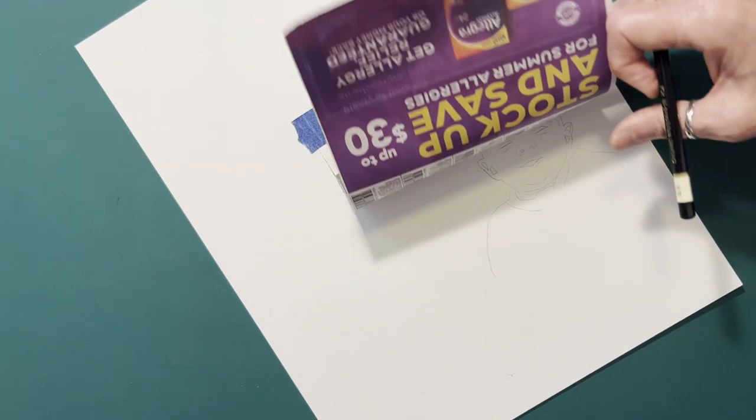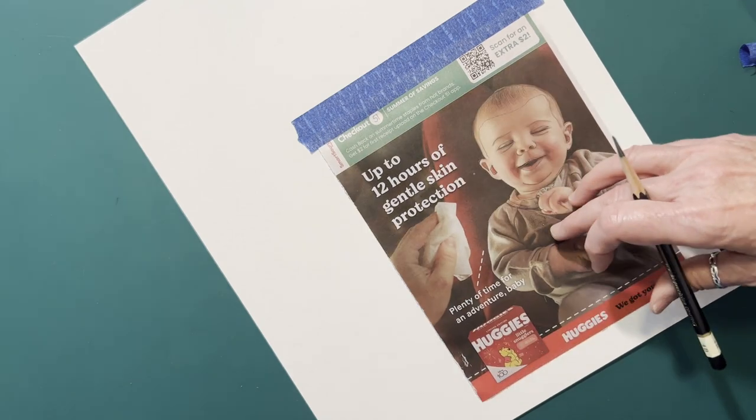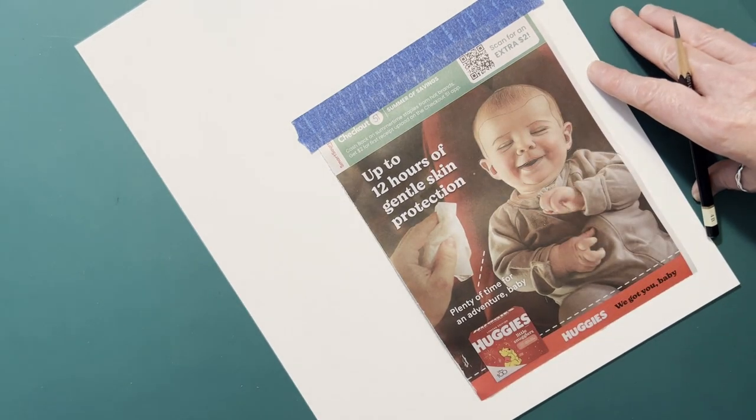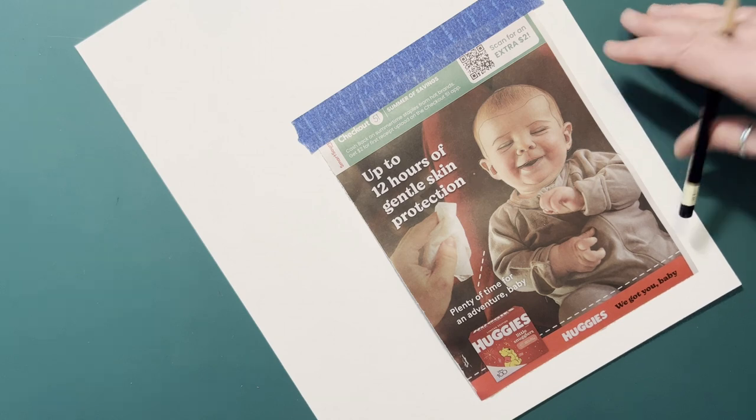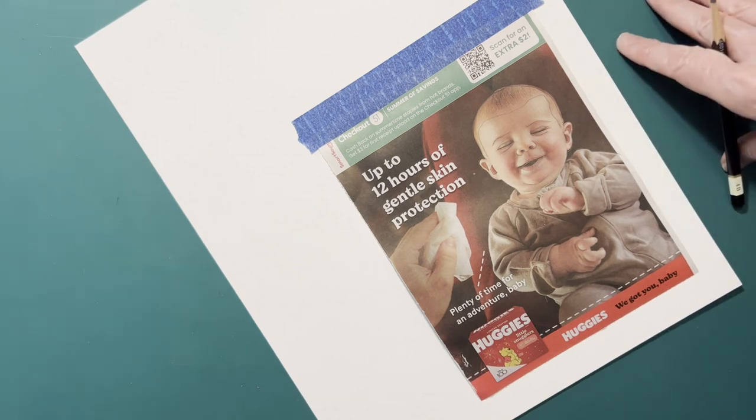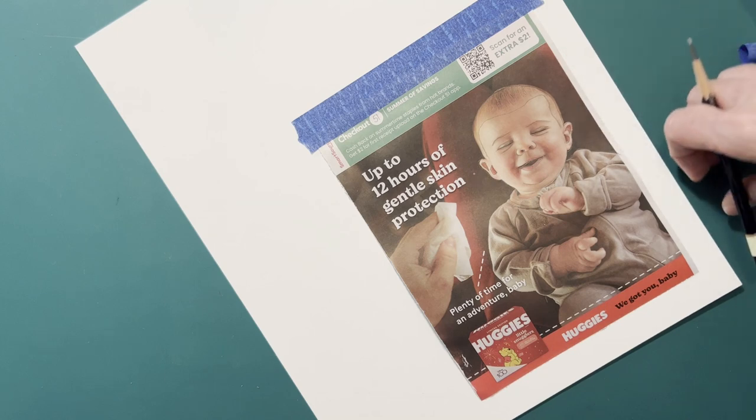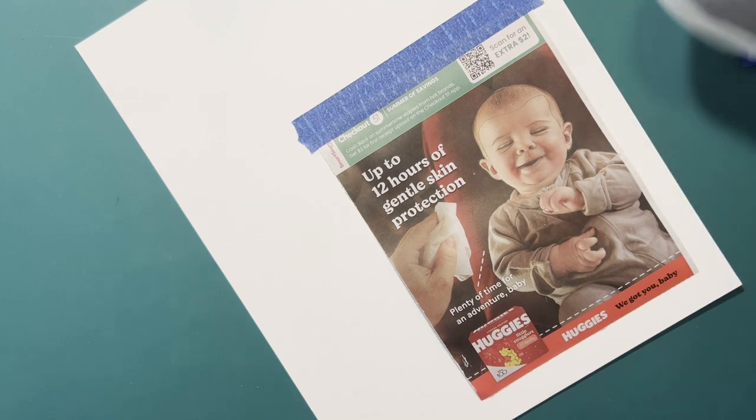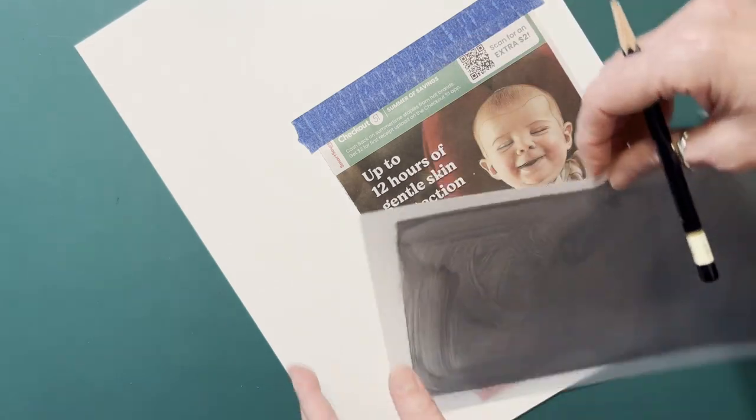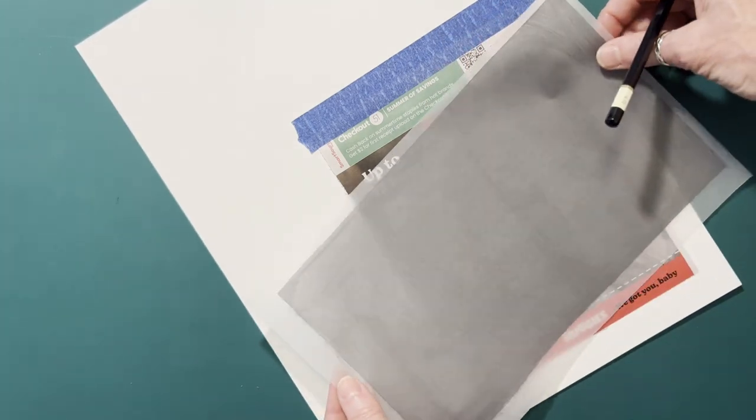But this is a great way of being able to transfer on pastel mat or some of the charcoal papers that have such a tooth to it that it's harder to erase the markings once you put them on there. Now you'll have this little piece of paper that you can save and use and reuse as much as you want.